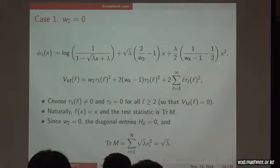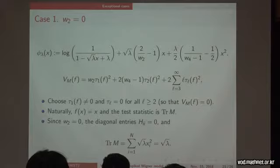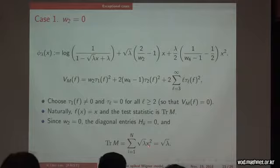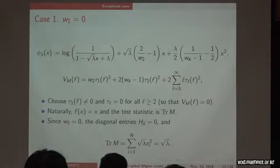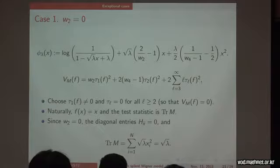Future work includes: first, constructing better tests using entry-wise transformation, since unlike pure random matrix theory we are allowed to apply arbitrary functions to entries before computing eigenvalues — similar to what is done in deep learning. However, for Gaussian noise this cannot beat the known optimal rate. Second, extending to the rank-k spiked Wigner model with k signals. Third, extending the results to the rectangular/Wishart case, which is more relevant for statisticians dealing with sample covariance matrices.